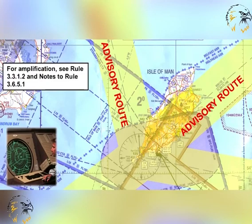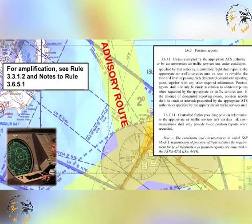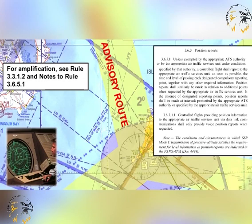This situation is amplified by the rules of the air shown on screen here. The pilot of an IFR flight operating outside controlled airspace but who is required by the appropriate air traffic services authority to submit a flight plan and to maintain an air-ground voice communication watch with an air traffic services unit — for instance, an IFR flight within advisory airspace — is required to report his position as specified in rule of the air 3.6.3, applicable to controlled flights.